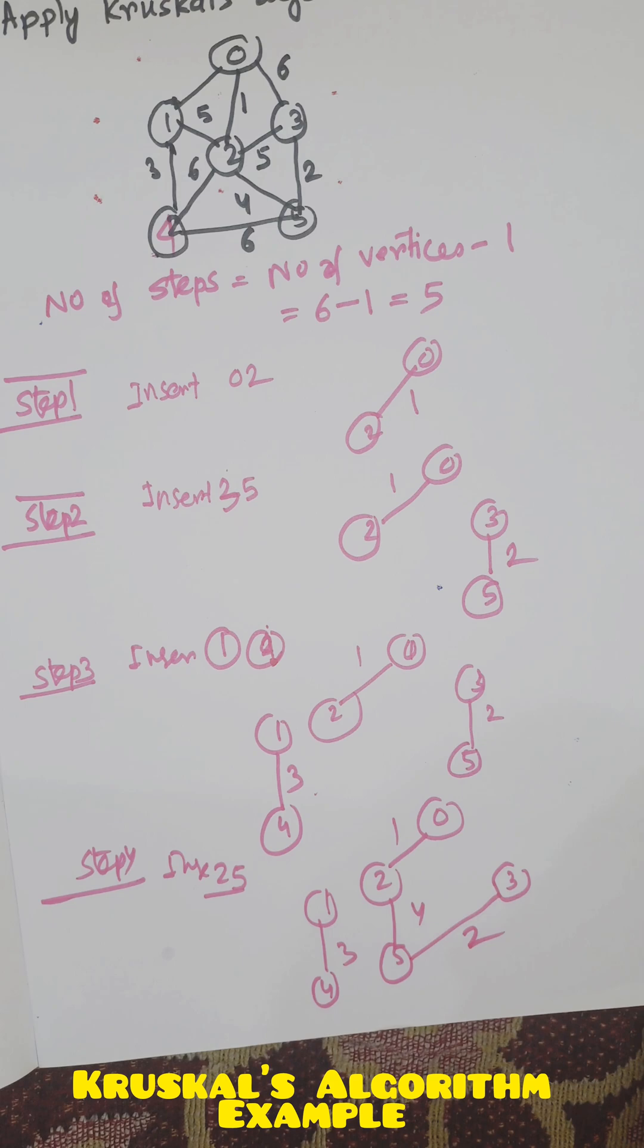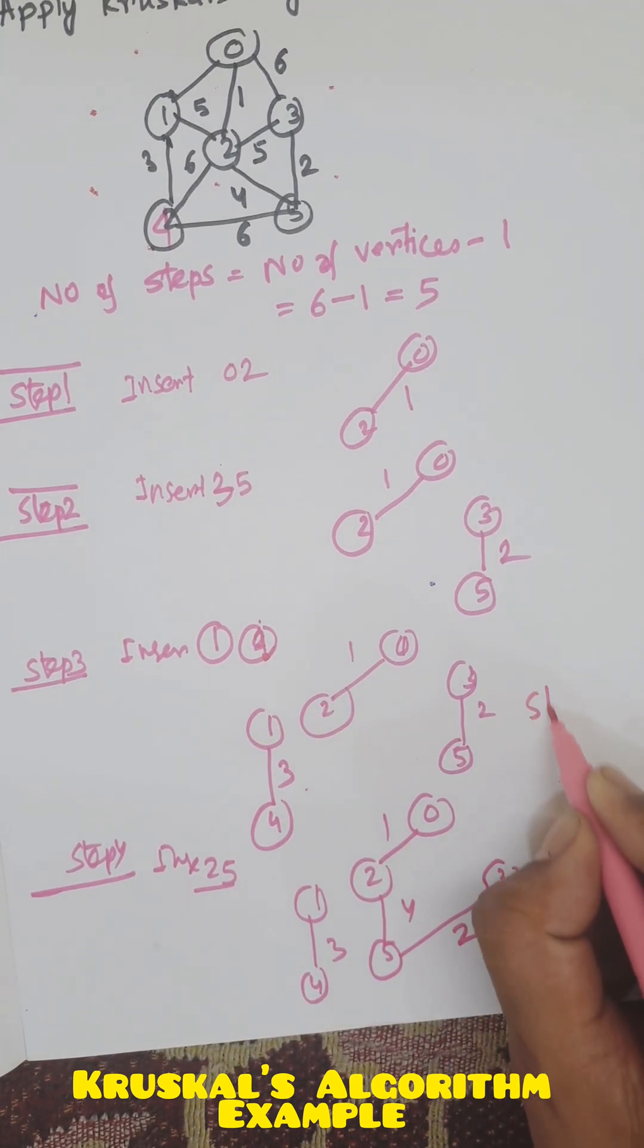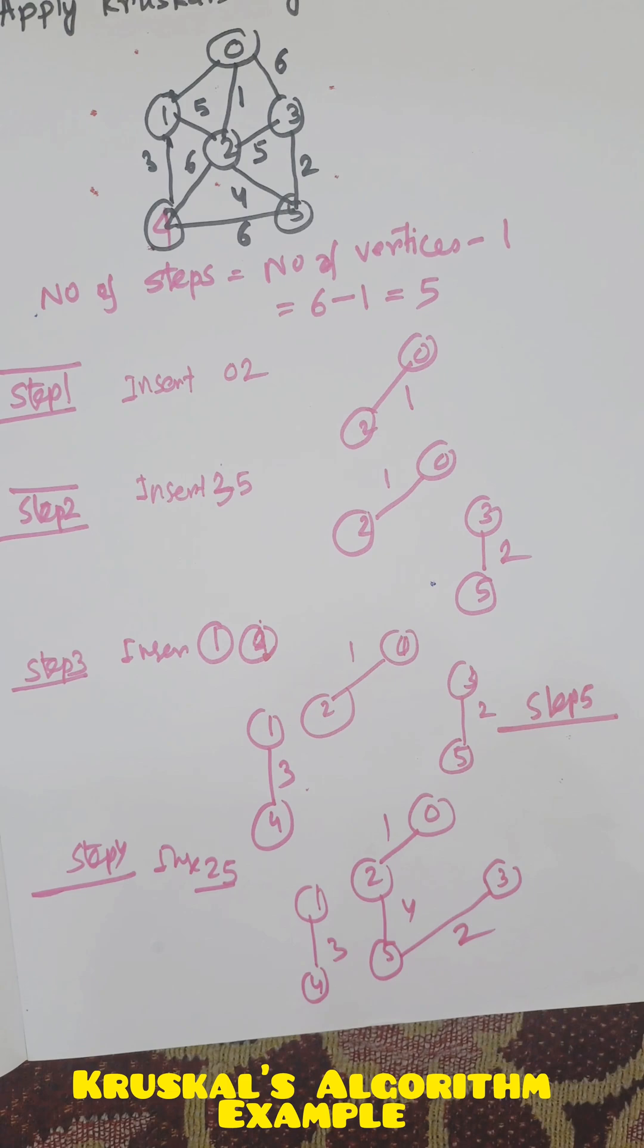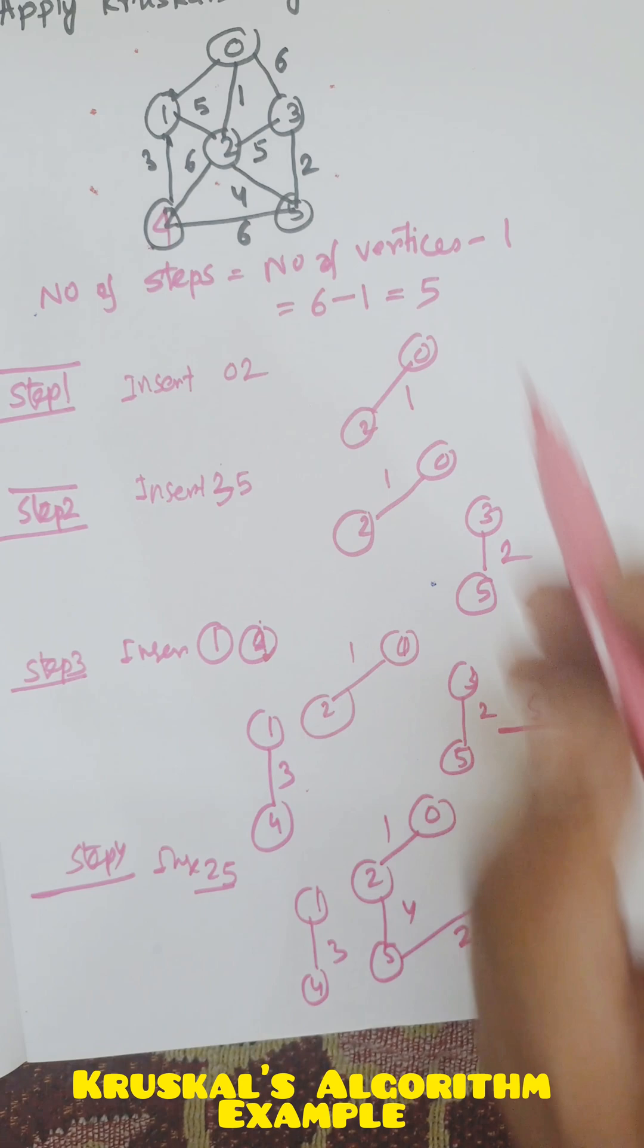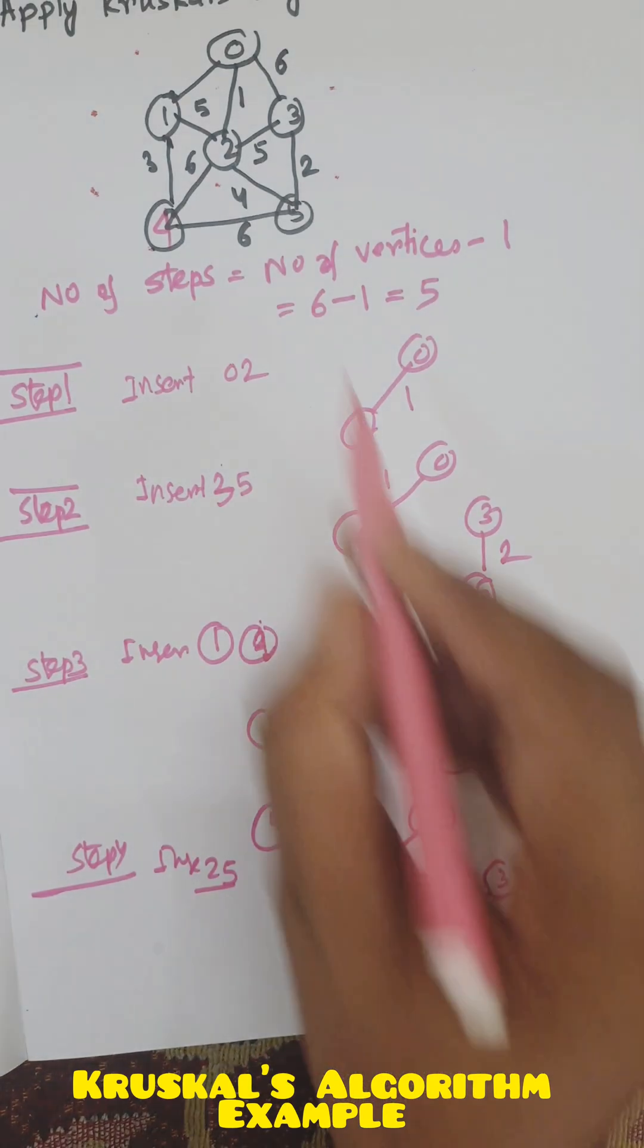Now step 5, the last step. The next minimum cost we can choose is 5, but if we choose that edge there will be a circle, a closed path. So no need to choose edge 2 and 3.